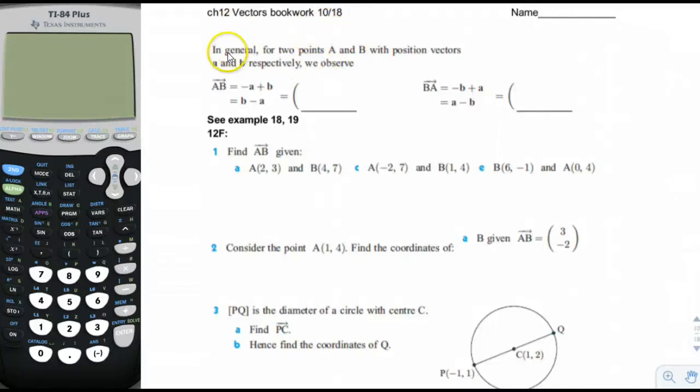Vectors, page 10. In general for two points A and B with position vectors A and B respectively, we observe that the vector AB is equal to negative A plus B, or vector B minus vector A, which equals B1 minus A1 and B2 minus A2. The vector BA, which is in the opposite direction, is simply A1 minus B1 and A2 minus B2.